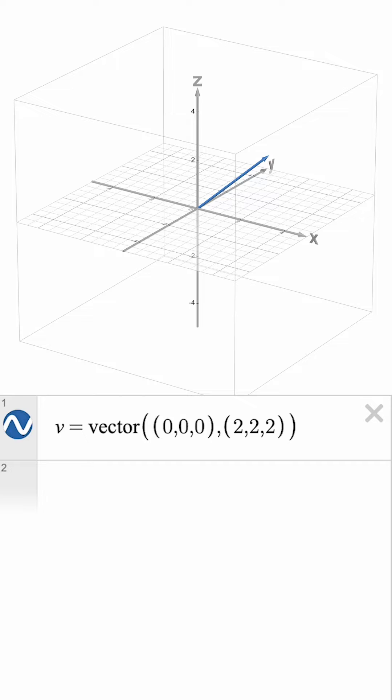If we want to see the points at the beginning and end of our vector, we can type v.start to plot the point 0 0 0 and v.end to plot the point 2 2 2.